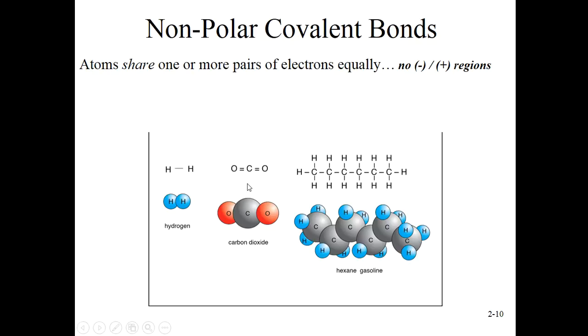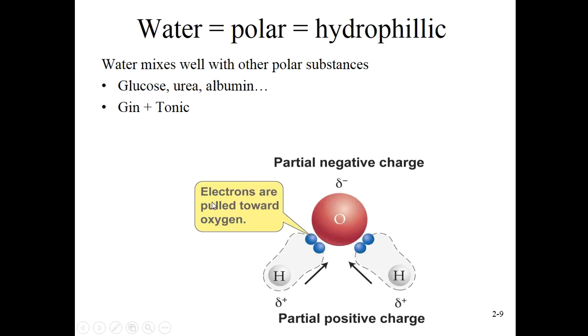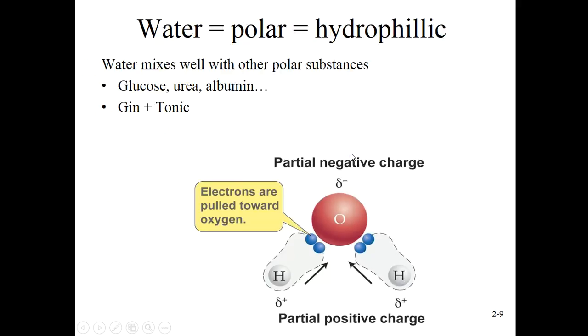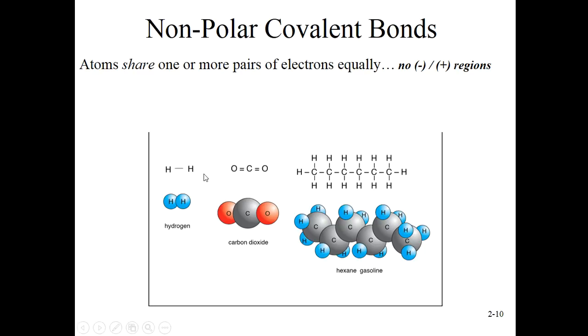Nonpolar covalent bonds are cases where the electron is just spending the same amount of time around each of these atoms. And so if you came in with a little electrical detector, all of the negativity of the electron, this electronegativity is going to be equal all across the entire molecule. Nonpolar. Atoms share one or more pairs of electrons equally. There are no negative or positive regions.